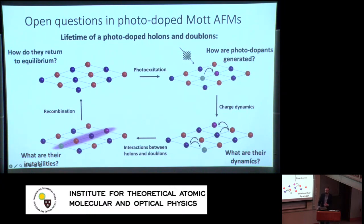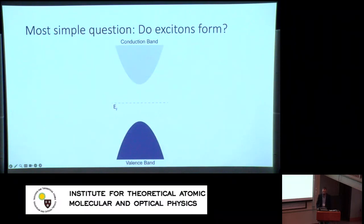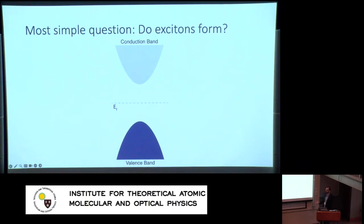For this talk, any photodoping experiment is naturally going to touch on all of these things. But I'm going to specifically focus on interactions between holons and doublons and how we consider the recombination of these holons and doublons. The most simple question we can ask — something readily studied in semiconductors — is: do excitons form in these photodoped Mott insulators?